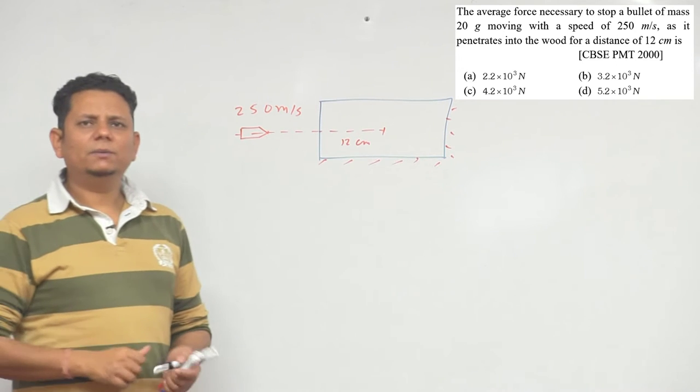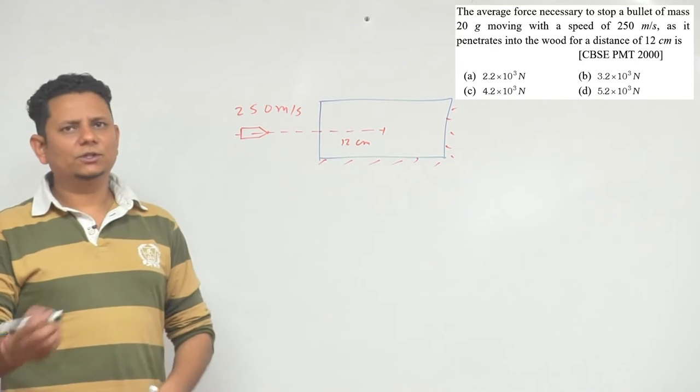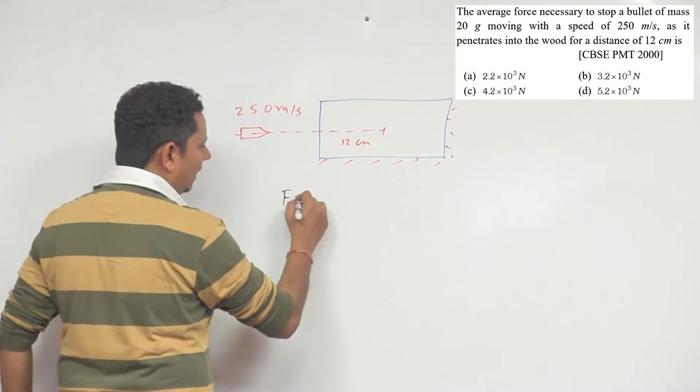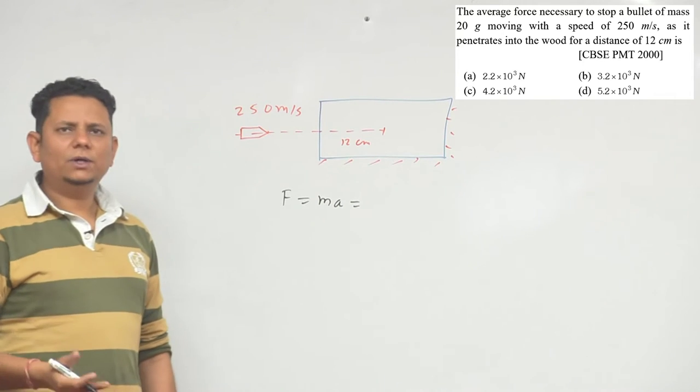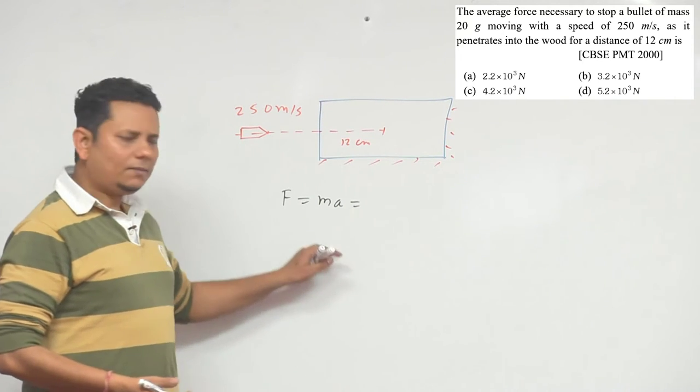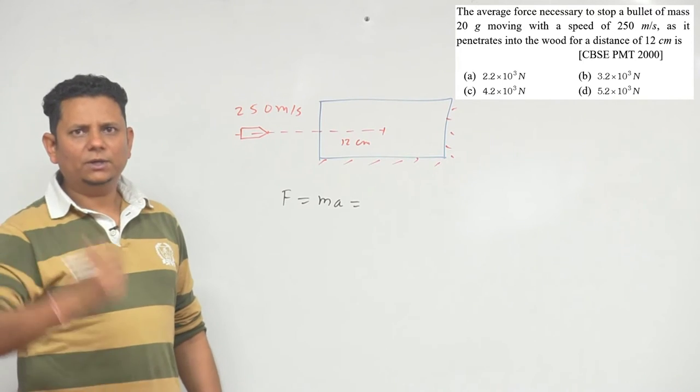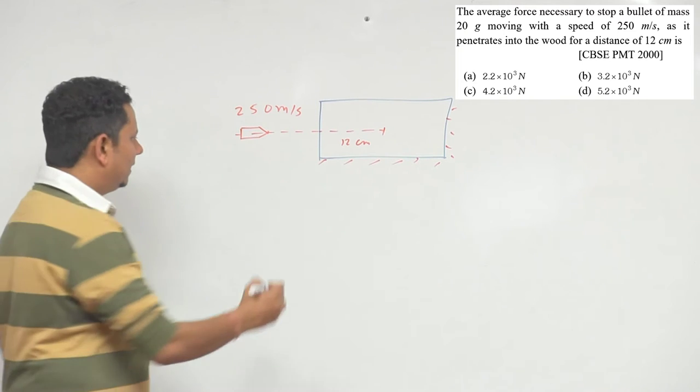So us case me hume ye batana hai, average force necessary. To is block ne kitna force is ke upar lagaya. Now is ko hum direct use kar sakte hai. Eek kaam karte hai, us ko hum third equation use karte hai. So jab hum third equation likhte hai, hum likhte hai: